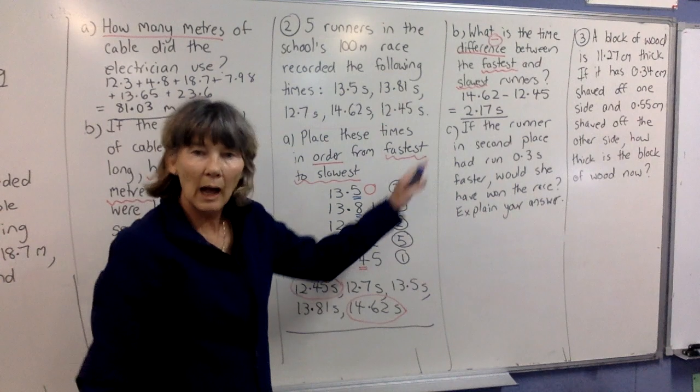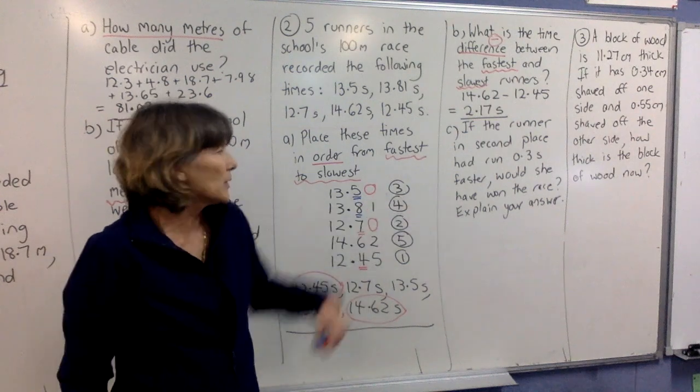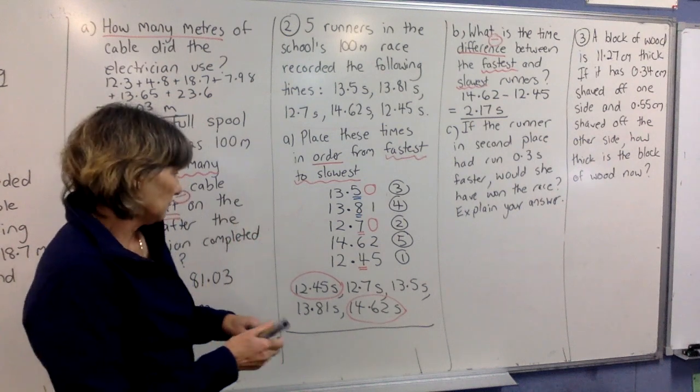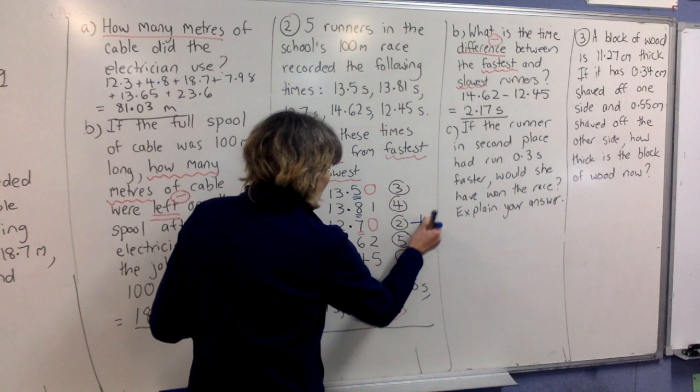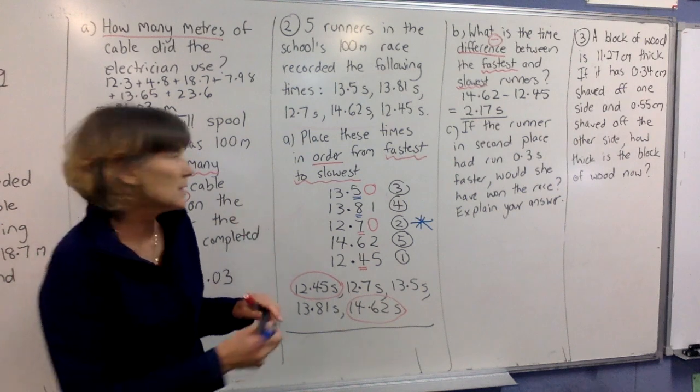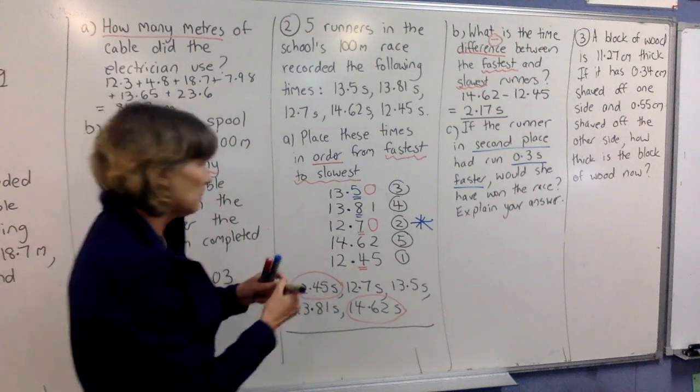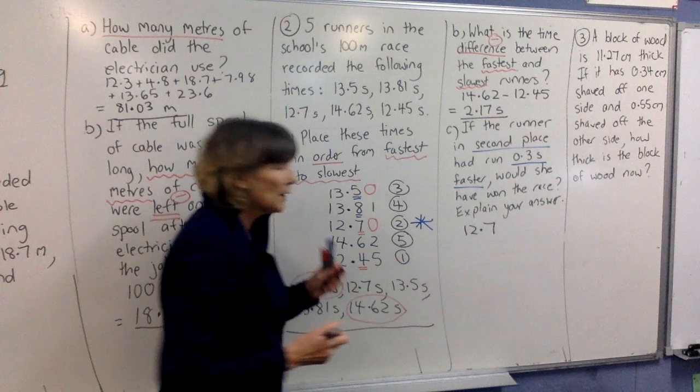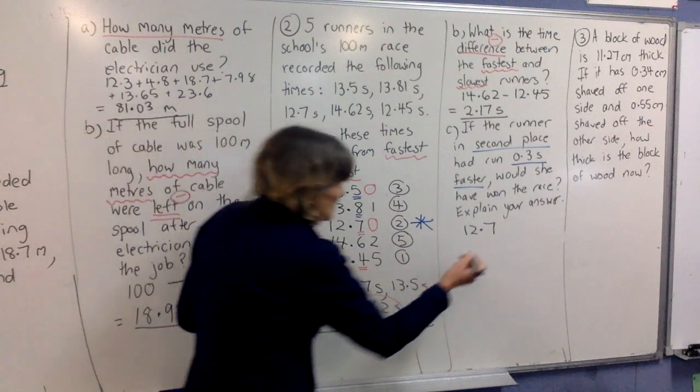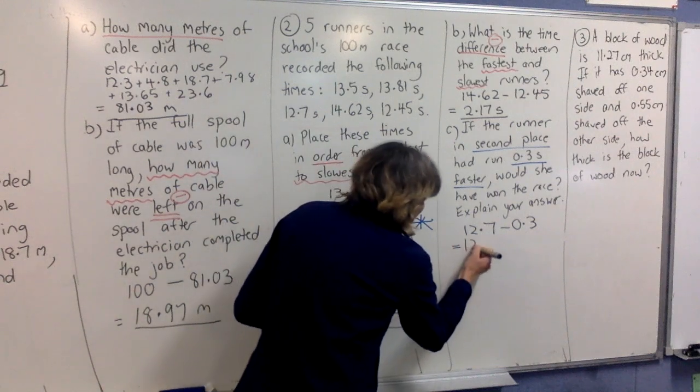Now, these questions are getting harder. So, you've really got to think about these. So, I don't just go diving and go, I'd better do something with that 0.3. I'll just do this. Think about it. If the runner in second place. Okay, so who are we talking about here? This is the person we're talking about. That's the person who came second. If that runner had run 0.3 seconds faster. All right, so let's take that second place runner. 12.7. Now, if they ran 0.3 seconds faster, that means we're going to subtract 0.3 seconds from their time. You can use your calculator for that and you'll get 12.4 seconds.